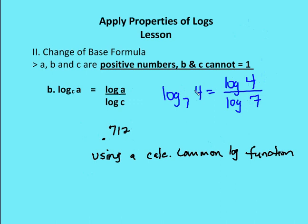Second, log base 7 of 4 is the same as a common log of 4 divided by the common log of 7. Again, I can use my calculator using the common log function. You should get a value of 0.712.